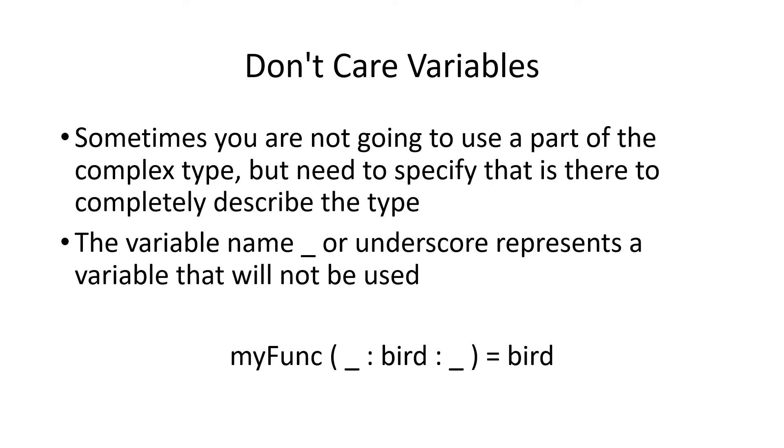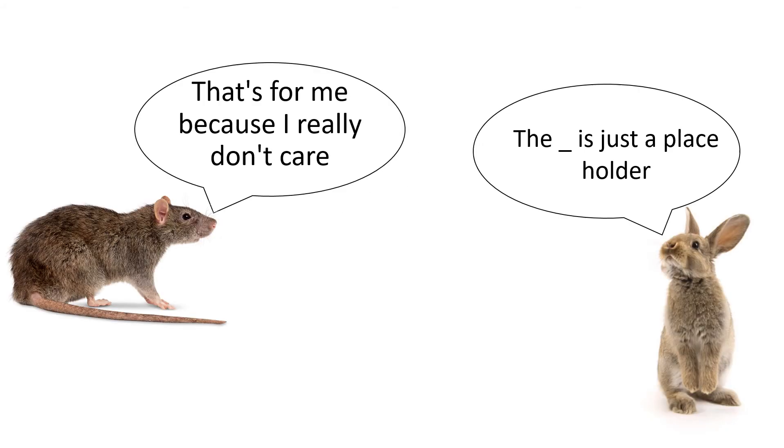Since we didn't really care about the values for the head and anything after the second character, we can put don't care variables or underscores. Underscores indicate that there has to be some value in this position, but we don't care what the value is, and we will not be using the value in the function. Here in our simplified function that takes the second or returns the second character of a string or a second element of a list, we don't care what the first element was or all the elements after the second. So we indicate those with underscores. The underscore is just a placeholder.